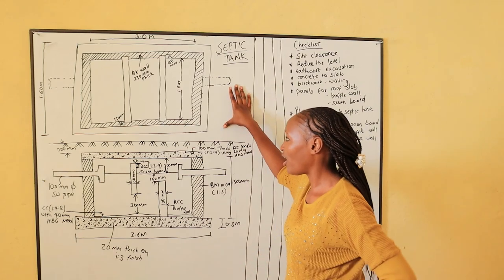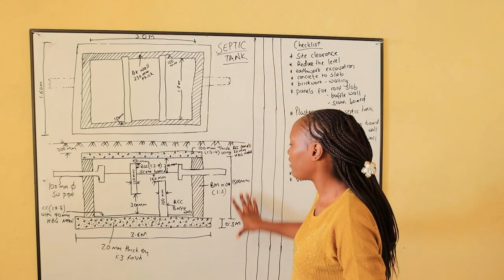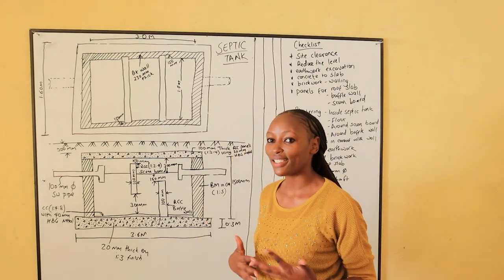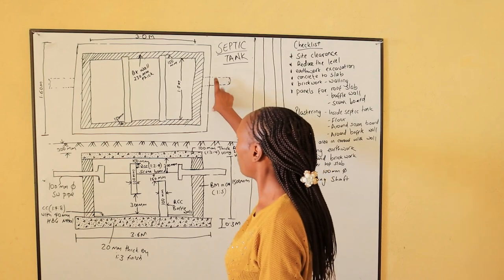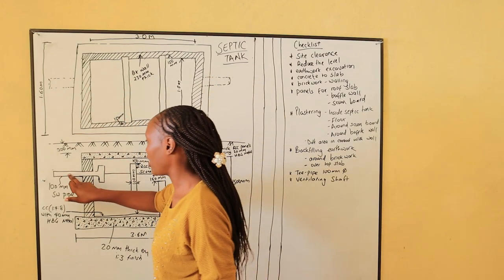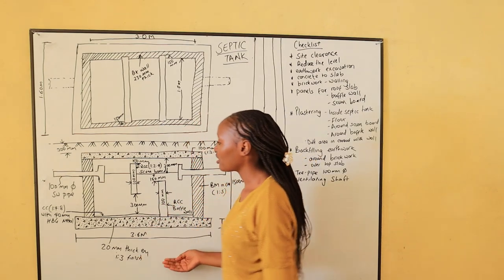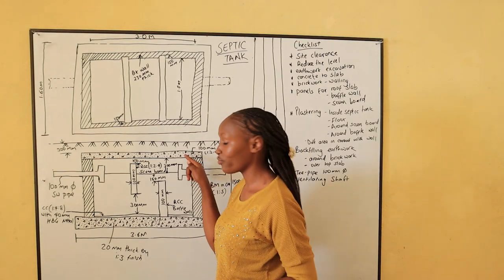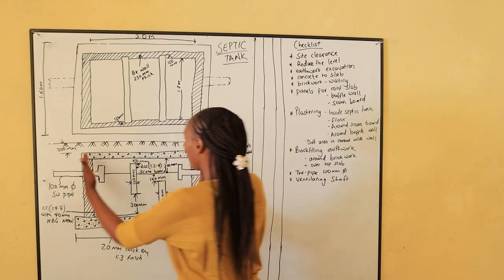Whenever we have a plan of an element — right now we are dealing with a septic tank — we have a plan here and we have a section. We should first be able to understand the plan and the section before starting to take off. In the plan of this septic tank we can see some pipes: this one is the inlet pipe and this one is the outlet pipe. Coming to the section to understand the septic tank — it has a roof slab, it has a floor, it has walls, then it has the roof.